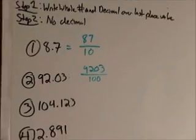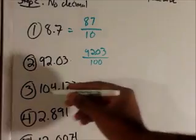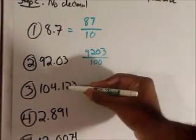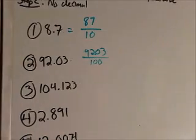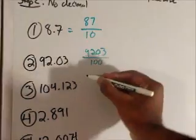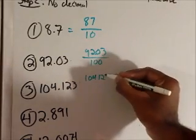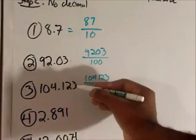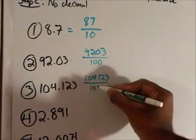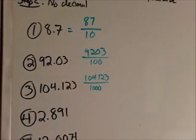Let's look at the next one. 104 and 123 thousandths. So write everything in the top: 1, 0, 4, 1, 2, 3. Don't put a decimal point. And what do we say? 123 thousandths. So a thousand needs to be in the bottom.